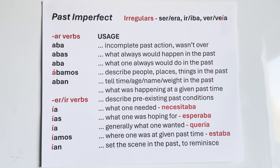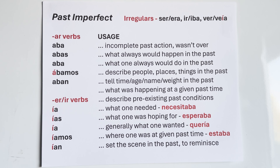Fifth usage: to tell time, age, name, weight in the past. For time: it was five o'clock — eran las cinco; it was one o'clock — era la una; it was one o'clock sharp — era la una en punto; it was 4:30 — eran las cuatro y media; it was 9:15 — eran las nueve y quince, or eran las nueve y cuarto — a quarter after.